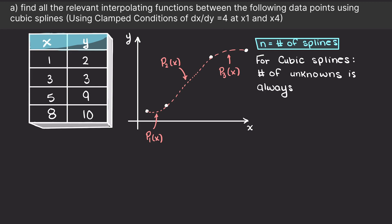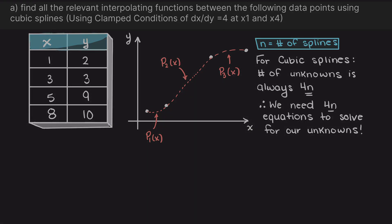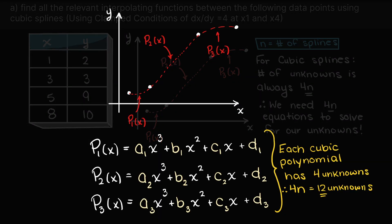We also learned that for each spline we need to find, denoted by n, we will need to find 4n equations such that we can solve for our 4n missing coefficients. Therefore, we have 12 missing coefficients as you can see here. So, let's quickly make a plan of attack on how we want to go about solving this problem.